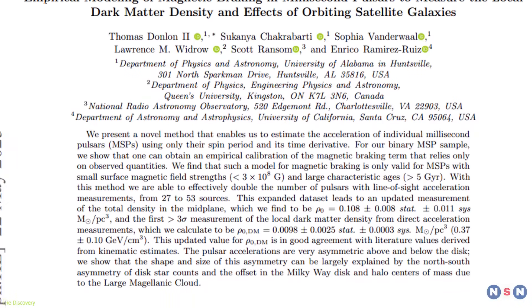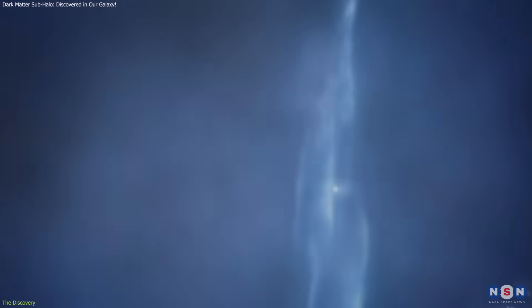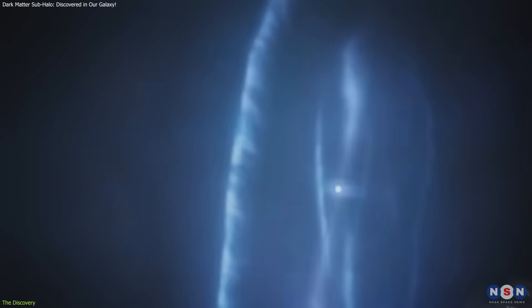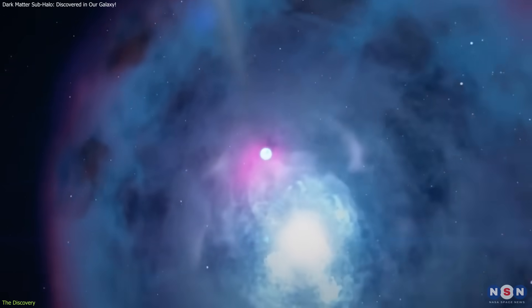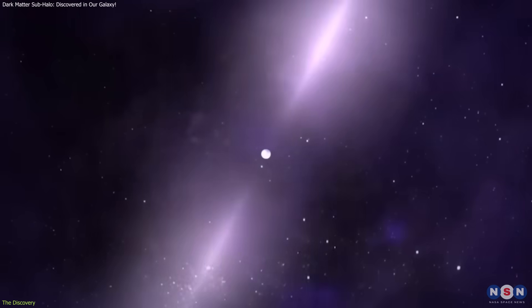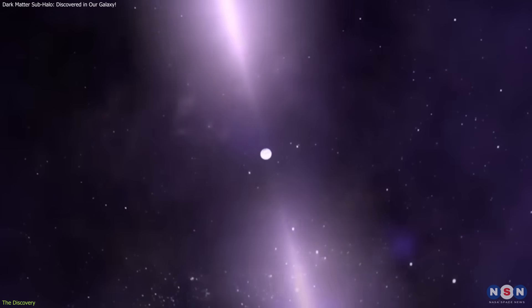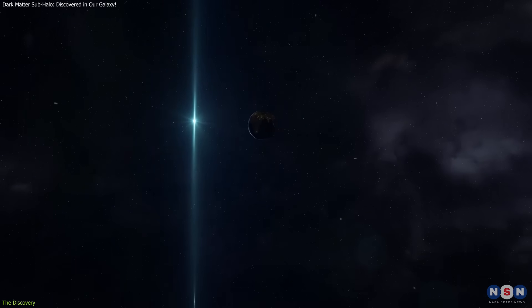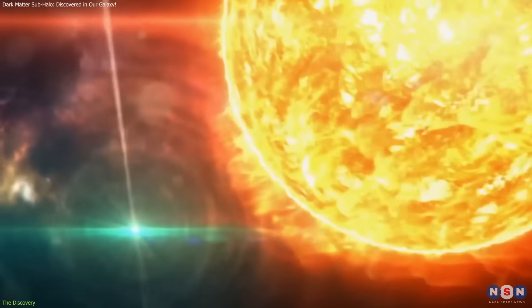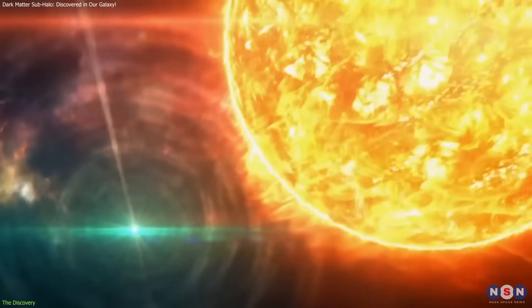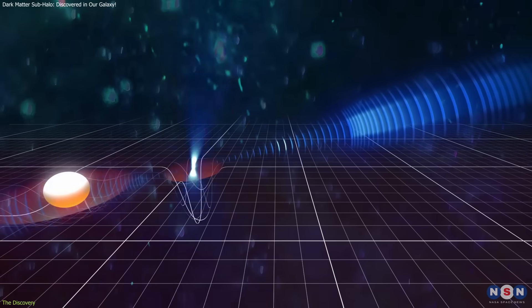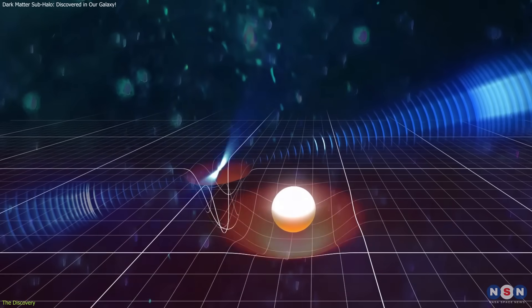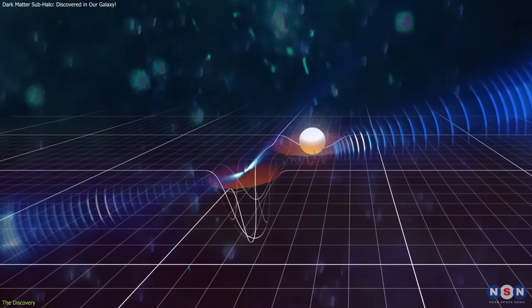The study is built on an elegant idea. Pulsars can serve as natural detectors of gravity. Pulsars are neutron stars left behind after supernova explosions, and some emit beams of radiation that sweep across Earth with clock-like regularity. In binary systems, where a pulsar orbits another star, the arrival times of these pulses can be predicted with remarkable precision. Any disturbance to the system, even subtle, shows up as a deviation in the expected timing.